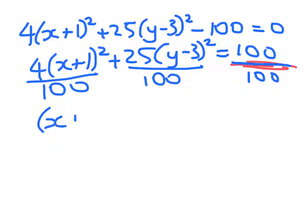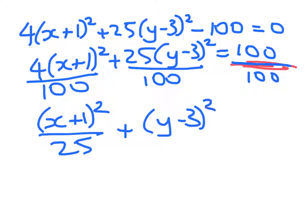That leaves me with (x + 1)²/25 + (y - 3)²/4 = 1. Now, as I said, I'm not going to do all of the features there. I'm not going to do the foci or the y-intercepts. But the center of that ellipse will be at (-1, 3).